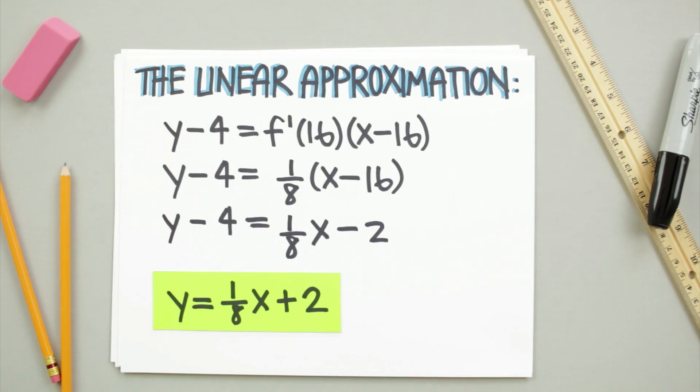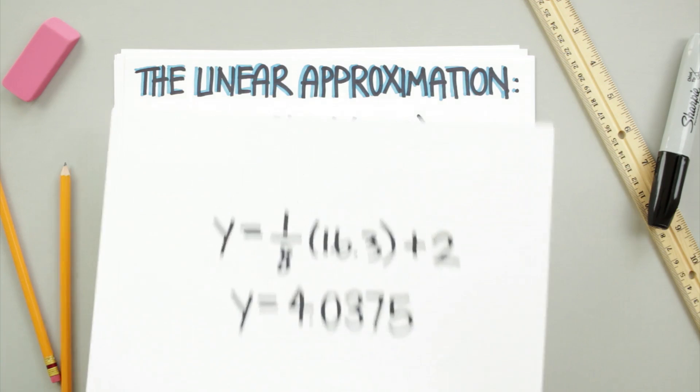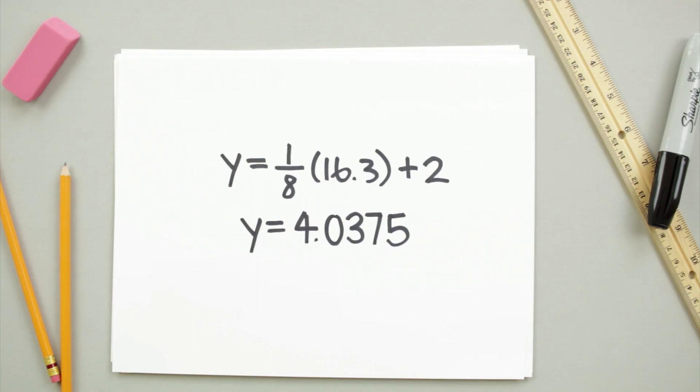Now all we need to do is plug in 16.3 for x, and that's going to give us 16.3 over 8 plus 2, or just 4.0375.